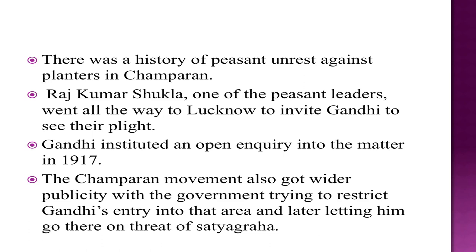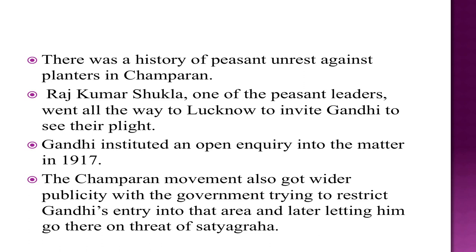Rajkumar Shukla, one of the peasant leaders, went all the way to Lucknow to invite Gandhi to see their plight. Gandhi instituted an open inquiry into the matter in 1917. The Champaran movement got wider publicity with the government trying to restrict Gandhi's entry into that area and later letting him go there on threat of Satyagraha. The outcome was that the Tinkathiya system — under which the farmers had to cultivate indigo in 3/20ths of their holdings — was abolished.